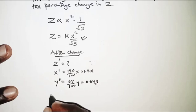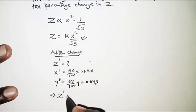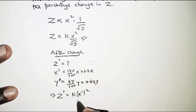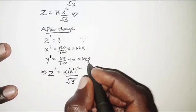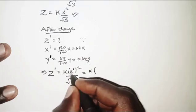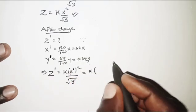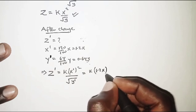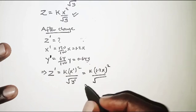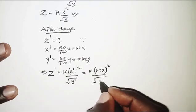This should imply that the new value of z, that is z prime, is k times x prime squared over the square root of y prime, which in this case should be k into x prime is 1.2x, 1.2x squared, over the square root of y prime, and y prime we had as 0.64y.